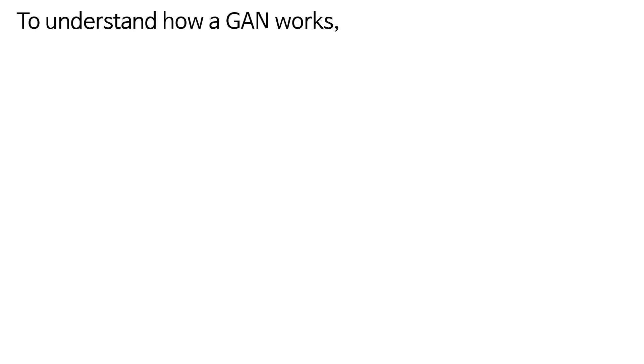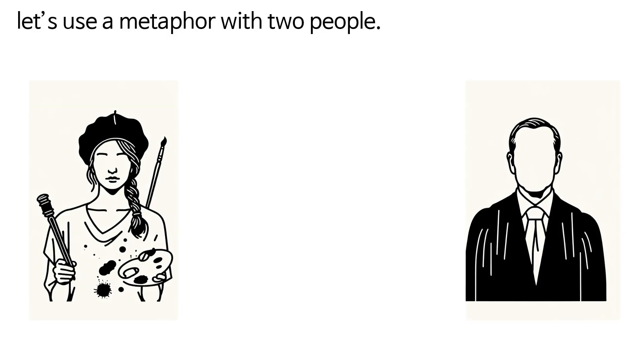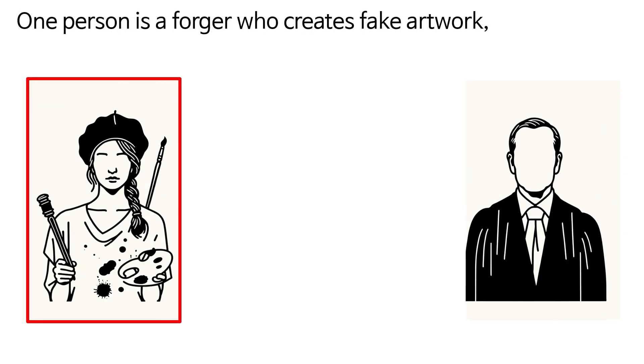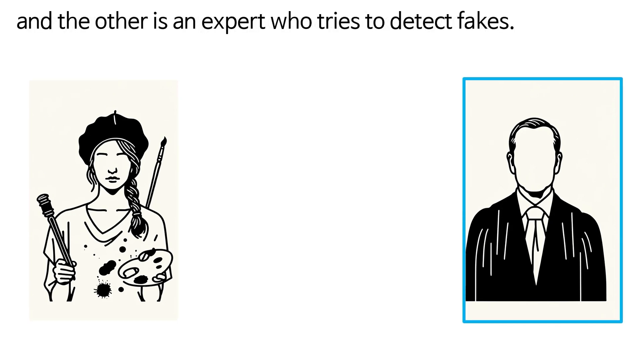To understand how a GAN works, let's use a metaphor with two people. One person is a forger who creates fake artwork, and the other is an expert who tries to detect fakes.